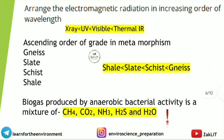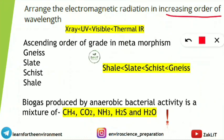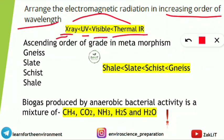The next question asked to arrange electromagnetic radiation in increasing order of wavelength. Among the five given types, X-rays have the least wavelength, followed by ultraviolet, then visible light, then thermal infrared. If asked by frequency, X-rays have the maximum frequency followed by UV, visible, and thermal. But for wavelength order: X-ray < UV < visible < thermal infrared.